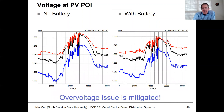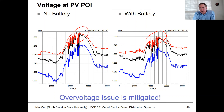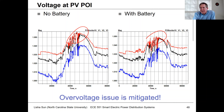This shows that without the battery, you get overvoltages. When you have the battery charging during peak PV times, it helps keep voltages down. This is kind of an expensive solution, though.